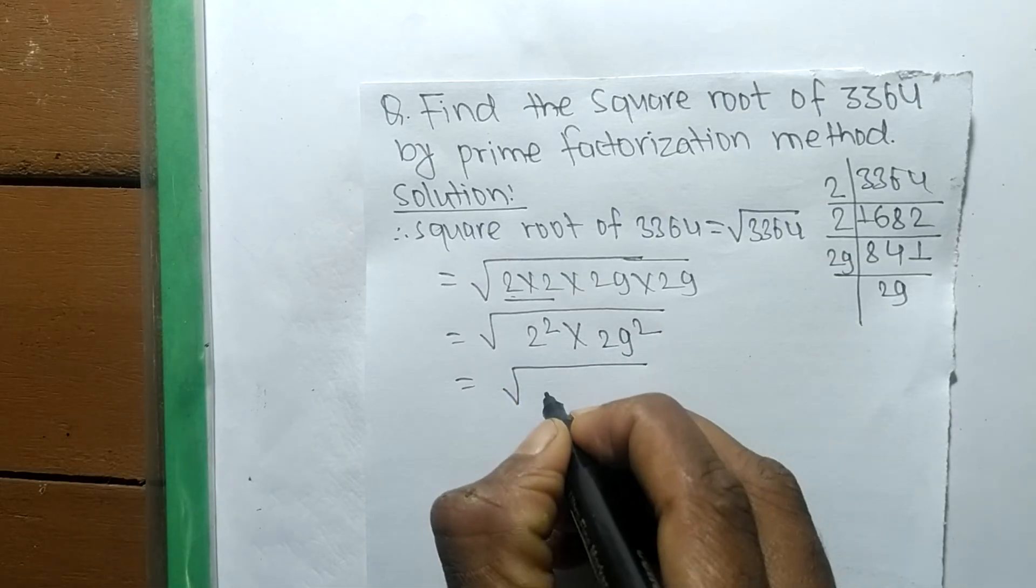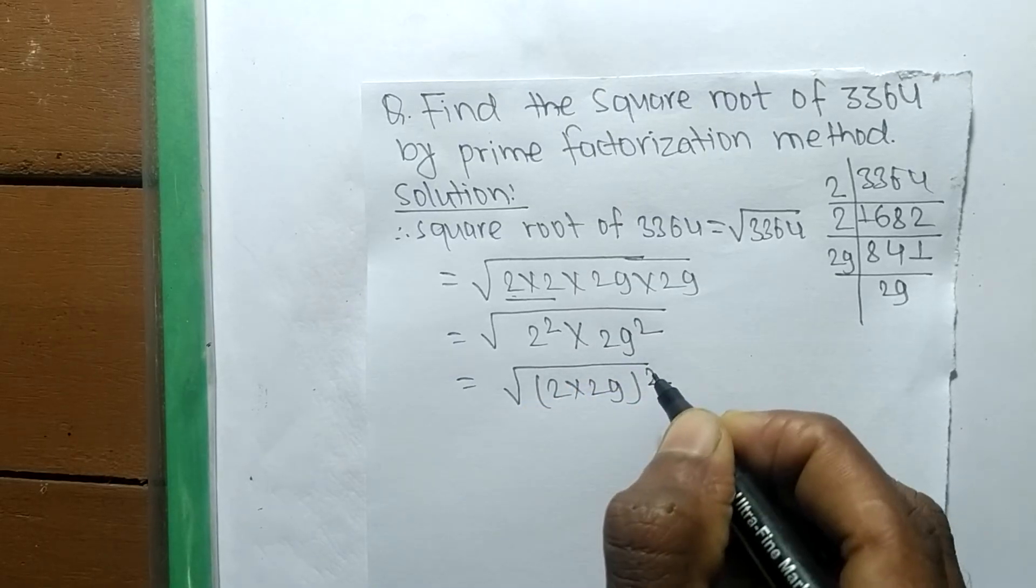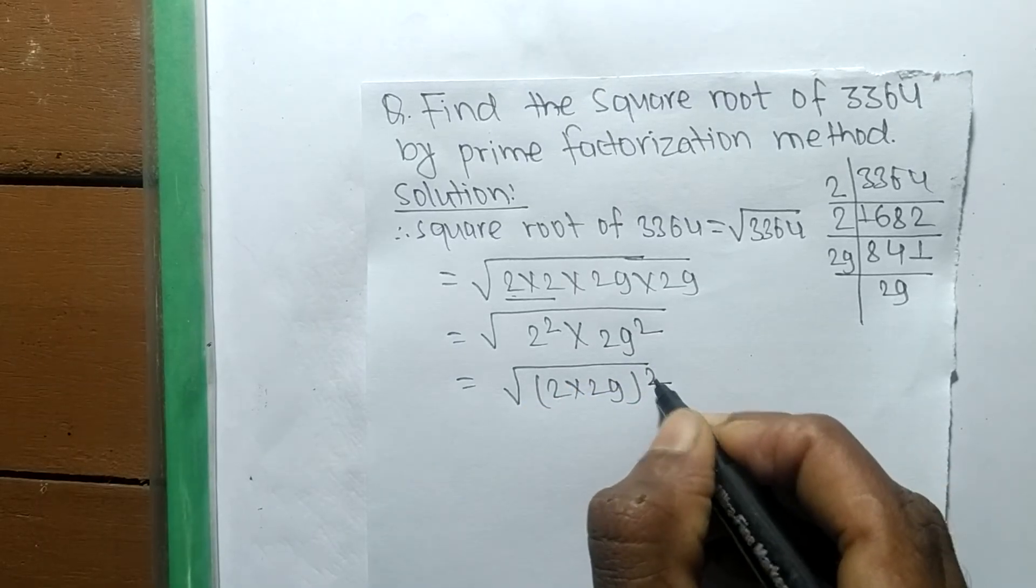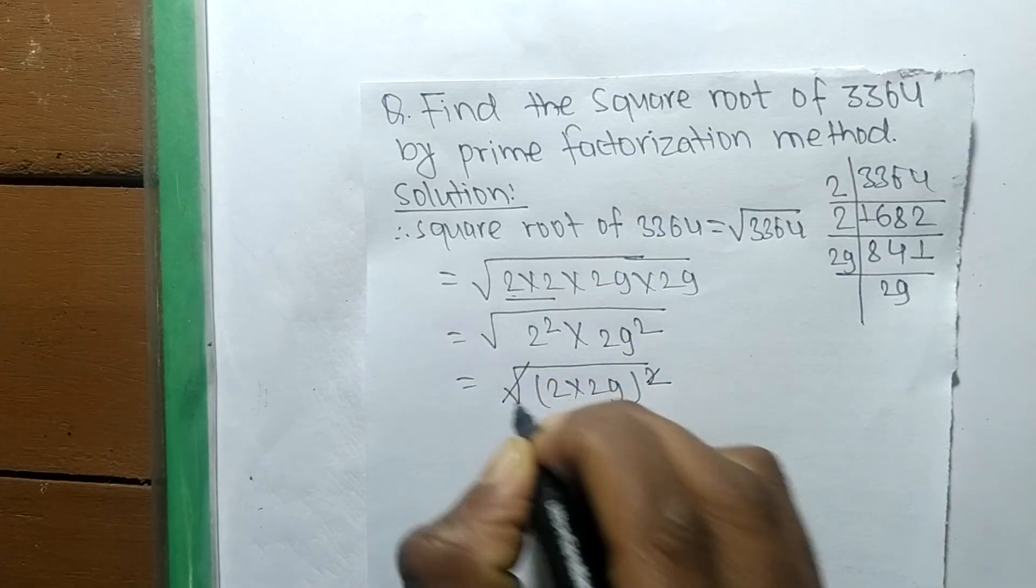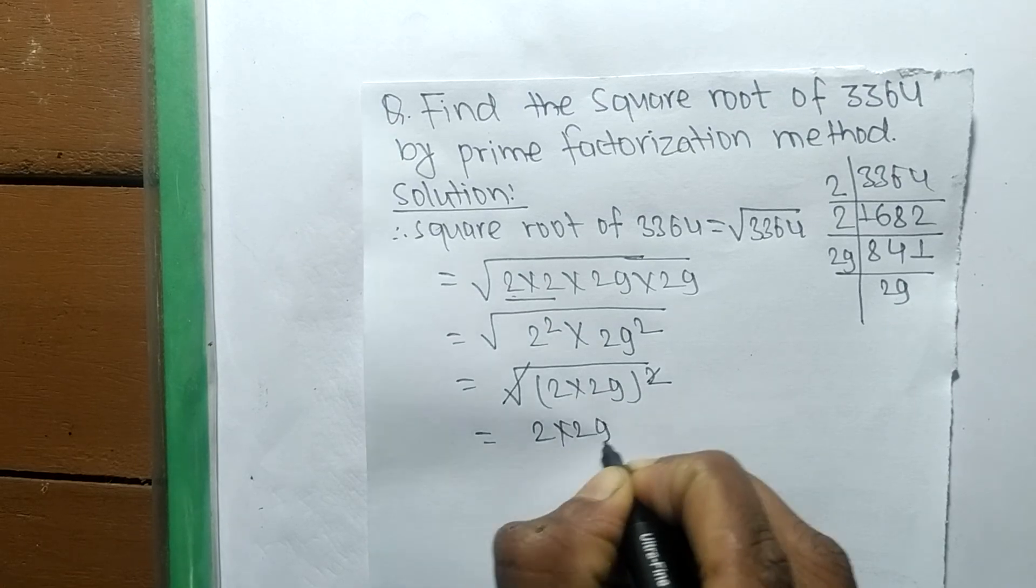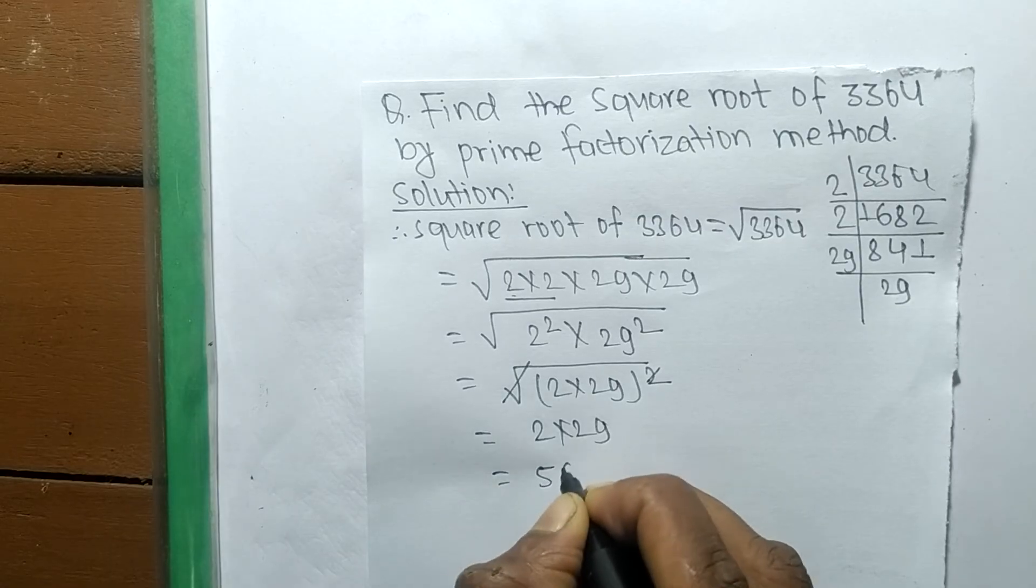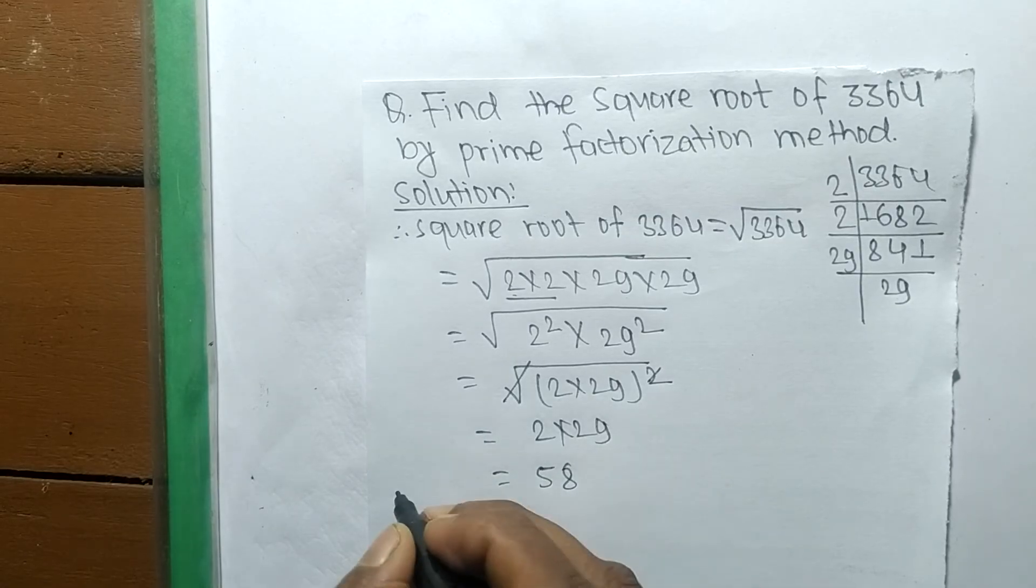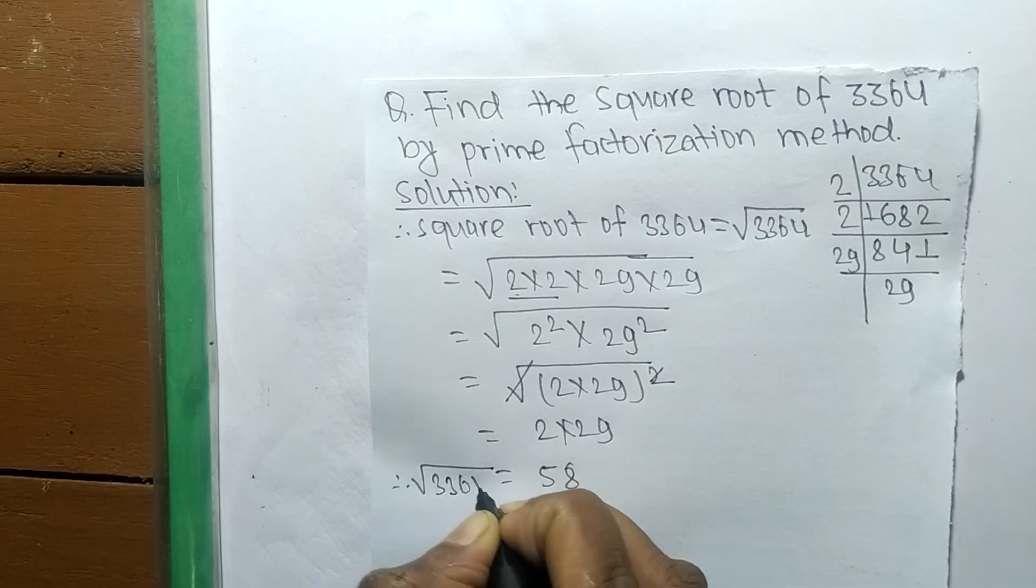Both numbers contain a square, so now we take 2 into 2 into 29 into 29 whole squared. We take the square common from both numbers. Now the square and square root cancel each other, so the remaining is 2 into 29, which equals 58. Therefore, the square root of 3364 is 58.